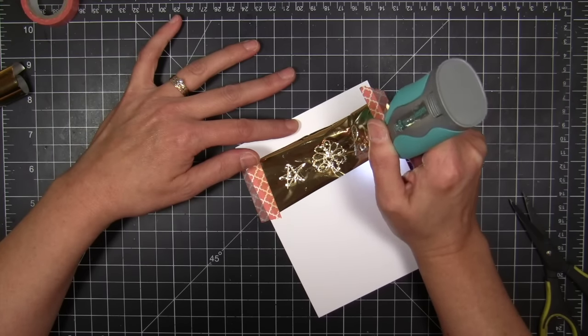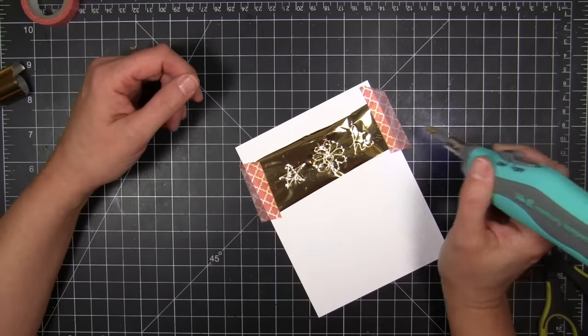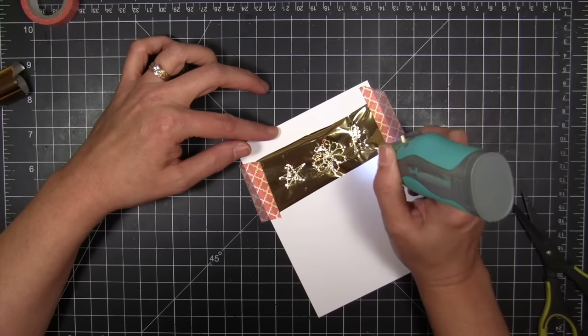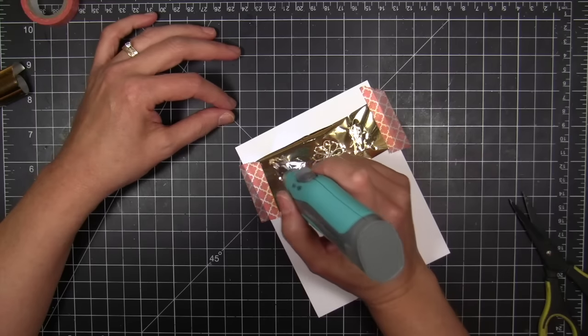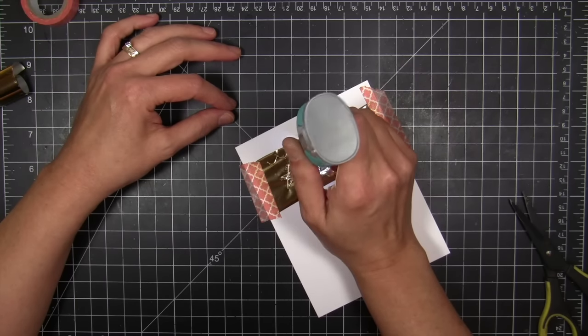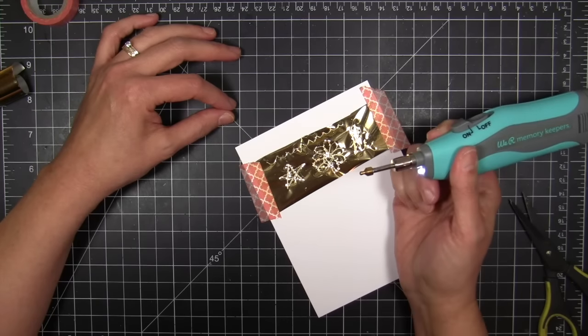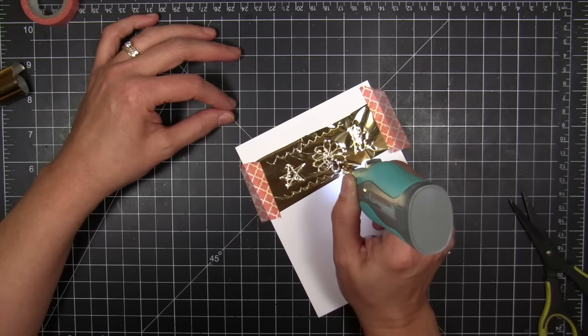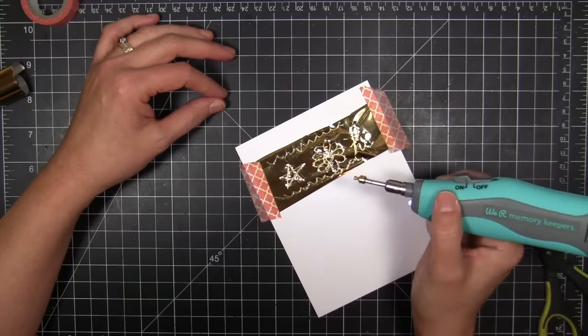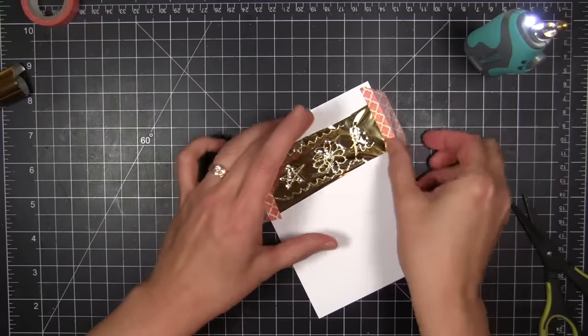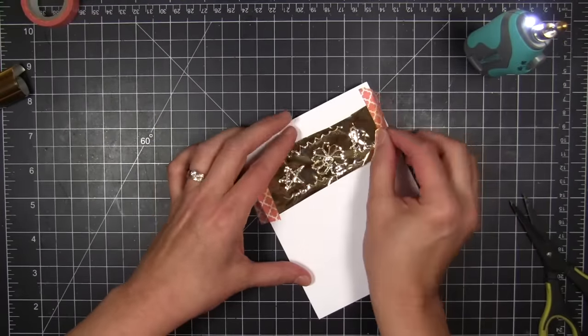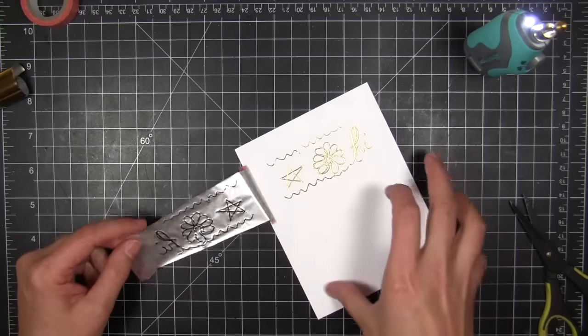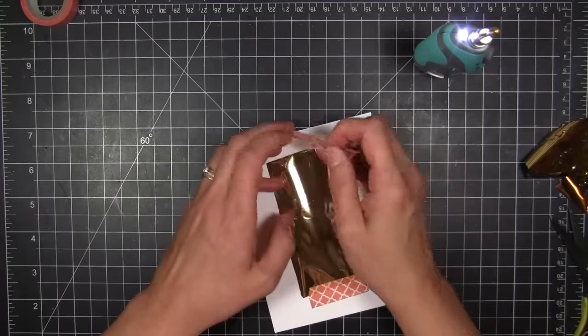And I will say I had to remind myself to really slow down with this tool. And I could tell when I was going too fast. Now there is a little bit of drag from the tip because of the heat and warping the foil as it moves along and activates the foil and applies it to the paper surface or whatever surface you're working on.